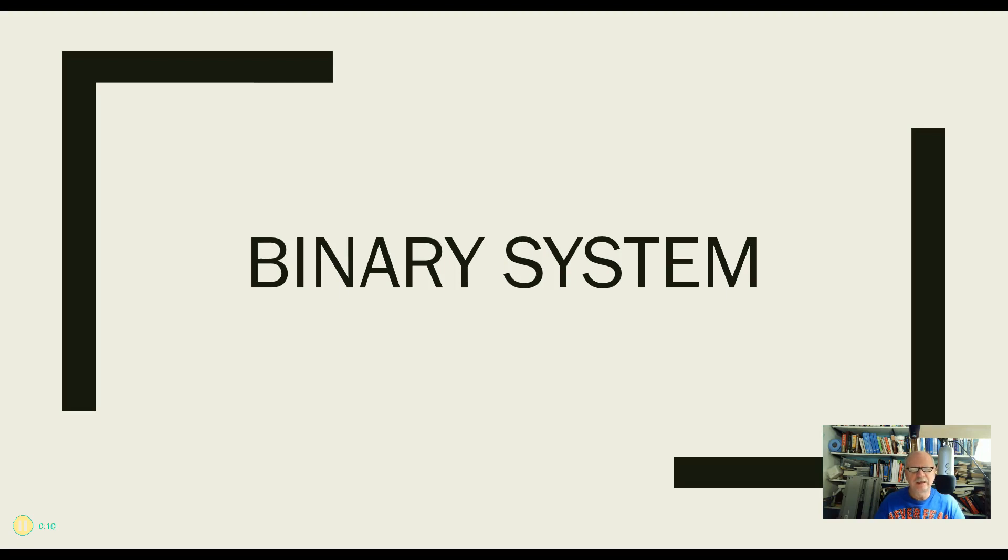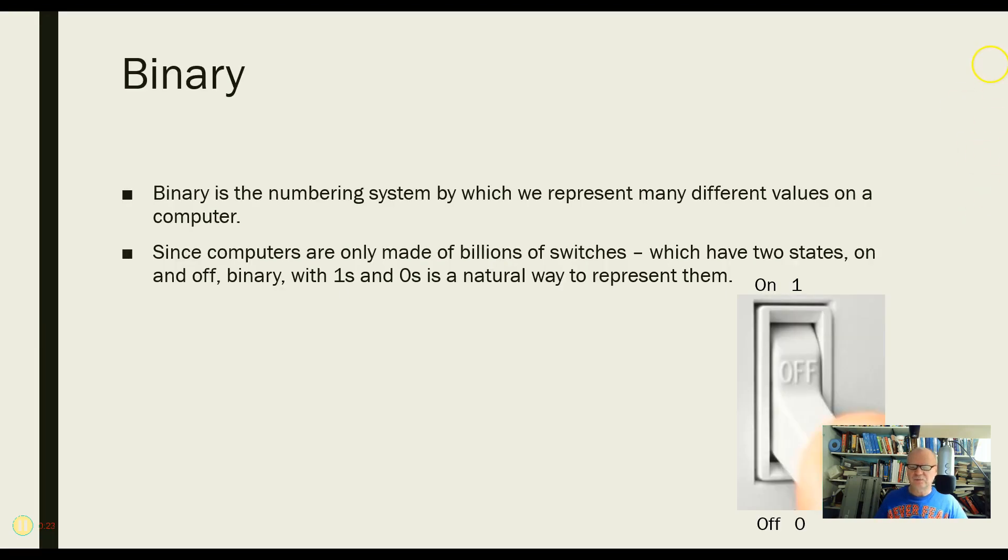Suppose that we have a certain frequency, 5 gigahertz, for example. Well, there's no 5 in a computer system. Computers have switches, and these switches can be on or off, 1 or 0. So there's no 5 here. There's only a 1 and a 0.